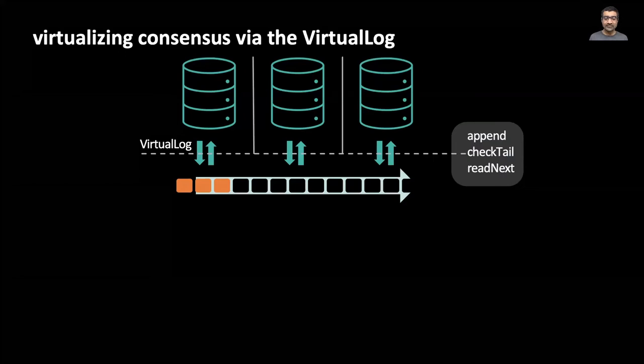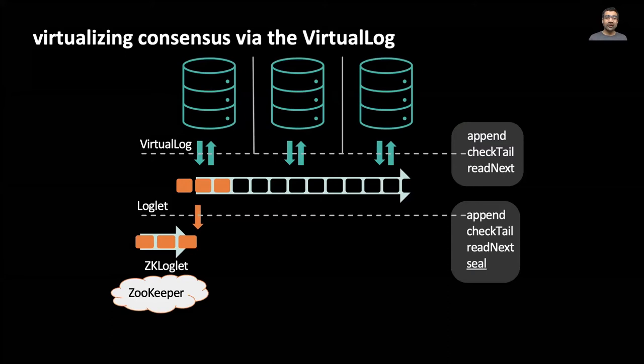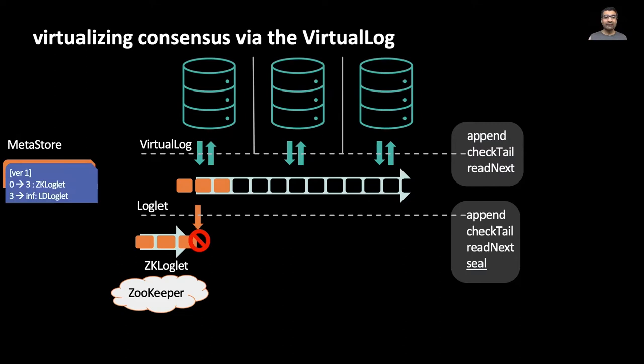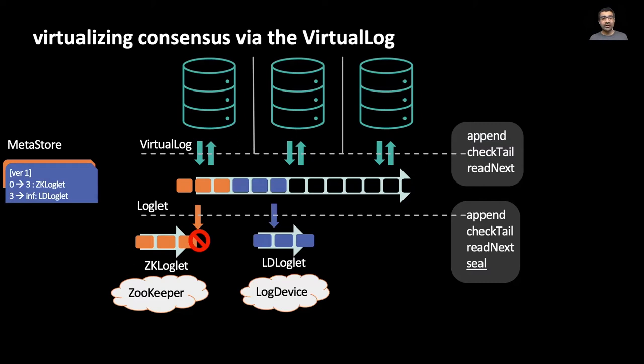In virtual consensus, we virtualize the shared log. The database runs over a virtual log, which is a shared log that is mapped to underlying physical logs that we call loglets. A loglet exposes a shared log API with an addition of a seal command. Once sealed, the loglet stops accepting appends. The virtual log stores the mapping from the address space to underlying loglets in a meta store, which is simply a versioned key value pair. To change this mapping, we follow a simple protocol. We seal the current loglet. We write a new mapping to the meta store. And then we route new appends to a new loglet. This new loglet can be an entirely different log implementation.